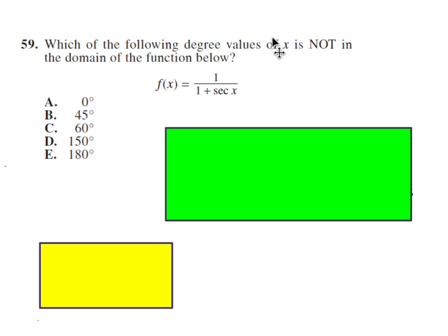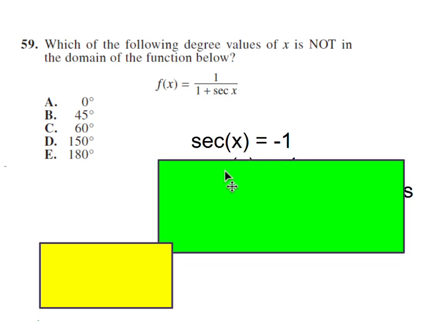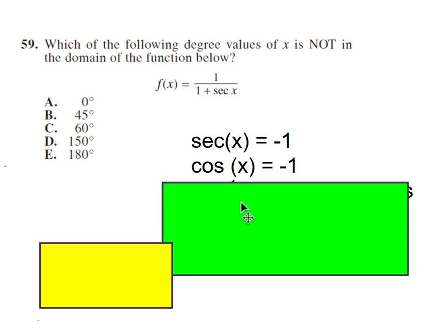Number 59, what value of x is not in the domain? The domain is the numbers that you can put in for x. Well, remember, when you have a fraction, the denominator cannot be equal to 0. So if the secant of x was equal to negative 1, 1 plus negative 1 equals 0. So we can't have the secant equal to negative 1. Now, if you know your trig functions, you know that the secant is the reciprocal of the cosine. The reciprocal of negative 1 is also negative 1. So the cosine cannot be equal to negative 1. So we just have to figure out for what angle is the cosine equal to negative 1.